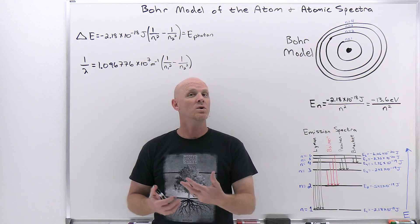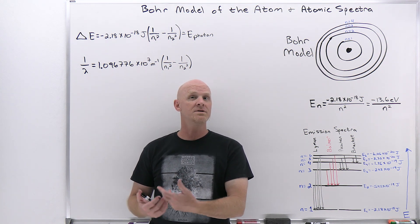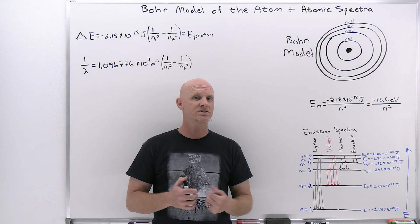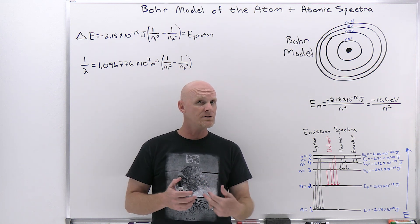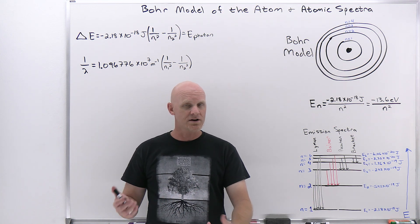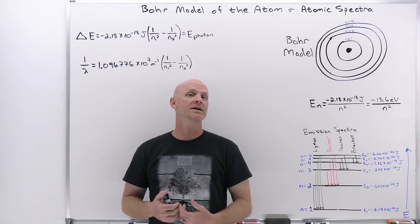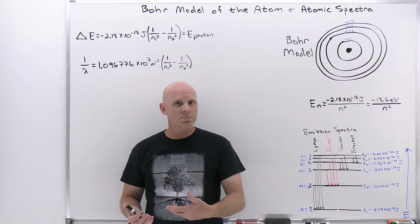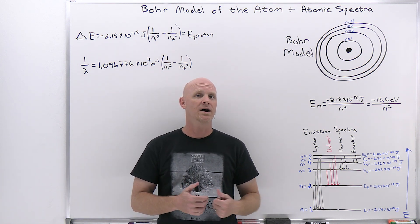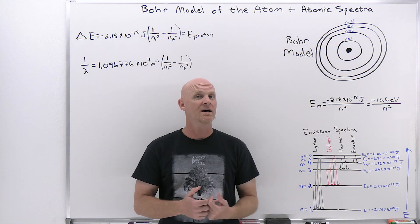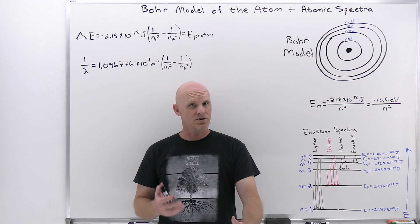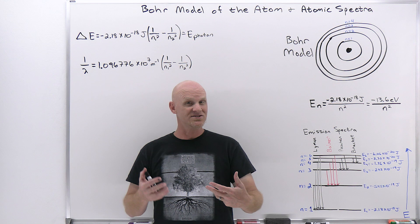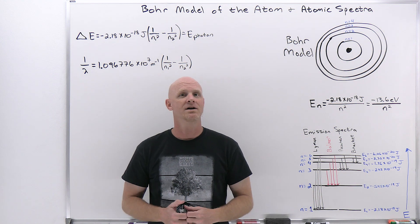These encompass both absorption spectra and emission spectra. Absorption spectra involve photons of light being absorbed — they're the missing photons in white light. Emission spectra involve only certain colors, wavelengths, frequencies, or energies being emitted. These different absorption and emission lines are different for different elements, but they always occur at the same places for a given element and can be used as a kind of signature for that element.